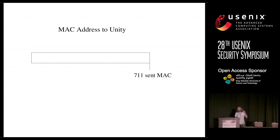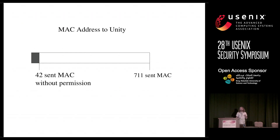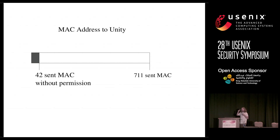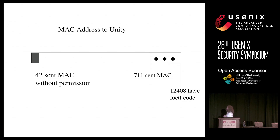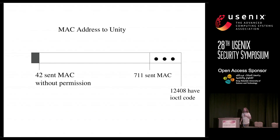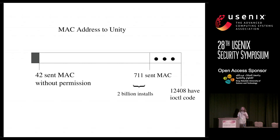We saw 711 apps sending the MAC address to Unity's server, and of those, 42 sent it without the corresponding permission, which is access network state. We since realized that when we ran all our experiments on Marshmallow, that version of Android does not allow any access to the Wi-Fi MAC address — meaning all 711 of these transmissions were done using the ioctl as a side channel that should not have been allowed under the Android permission model. We found 12,000 apps that had this code, but only 711 were actually observed sending this in practice. However, 711 corresponds to 2 billion installations on the planet according to Google Play metadata.